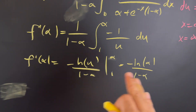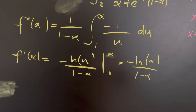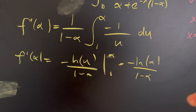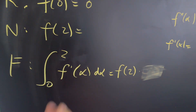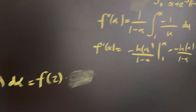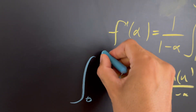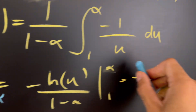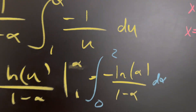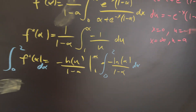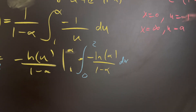Our f'(α) is now a simple function with respect to alpha. This is great because now we can take the integral from zero to two of both sides with respect to alpha. You'll see that this integration is actually more difficult than it looks.